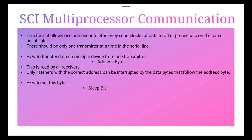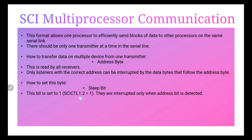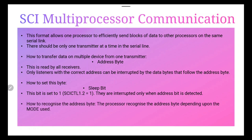The address byte is set by the SLEEP bit, which is set via SCI control register 1, bit 2 equals 1. Receivers are interrupted only when an address bit is detected. So when address bit mode is assigned, whenever an address bit is detected, the particular receiver will be interrupted. The processor recognizes the address byte depending on the mode used — either idle line mode or address bit mode.